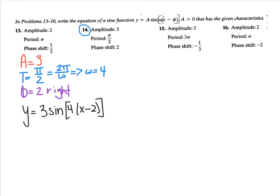So now we have all the pieces and we can write the equation: amplitude A equals 3, omega equals 4 from the period, and phase shift 2 to the right gives x minus 2. Now pause the video and do the same thing for number 16 — take that information and write a sine function equation with those characteristics.